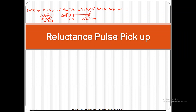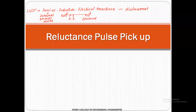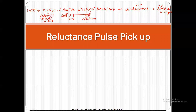The LVDT is used for the measurement of displacement. Displacement is the input signal and the output signal is nothing but a proportional electrical voltage or electrical current. This is the summarized point of LVDT.